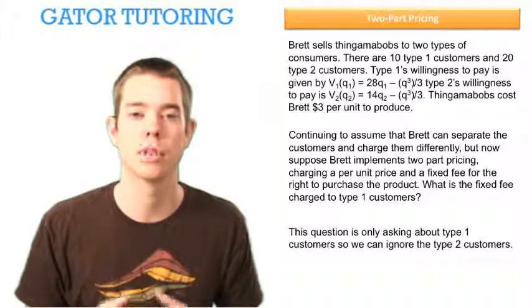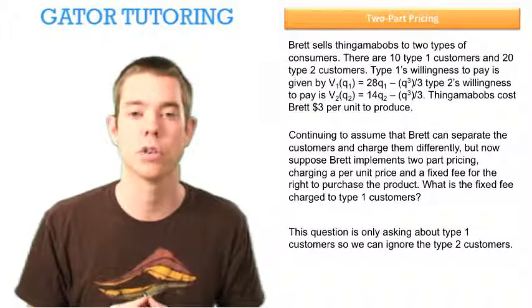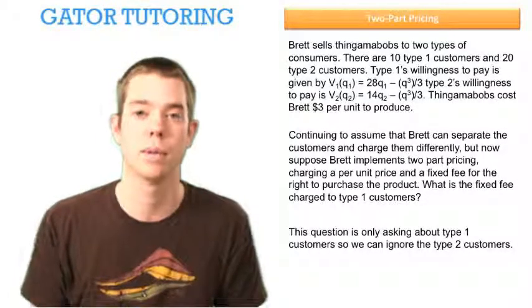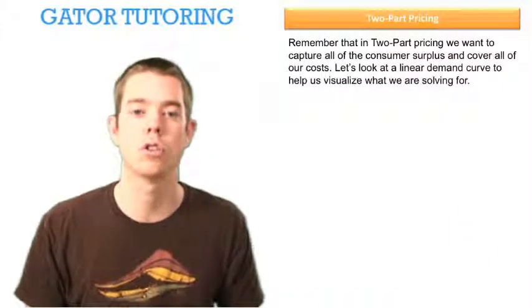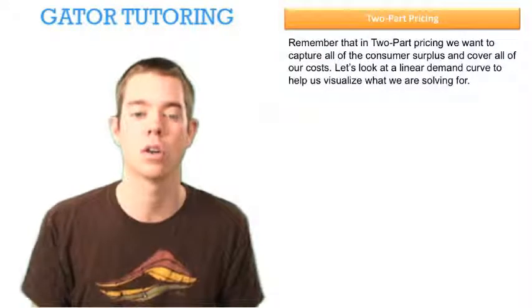So this question is only asking about type 1 customers, therefore we can ignore all the information given to us about type 2 customers. Remember that in two-part pricing, we want to capture all the consumer surplus and cover all of our cost.